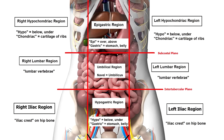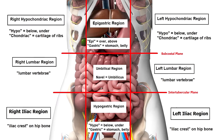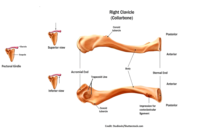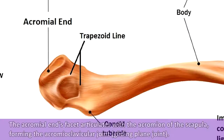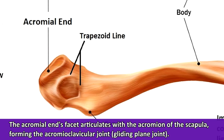The clavicle bone is also a common fracture point for athletes. Looking at the right clavicle, you'll notice that the acromial end is at the lateral side — the side near the arm — and it has a flattened appearance. The facet at the acromial end articulates with the acromion of the scapula, forming the acromioclavicular joint, a plane joint that allows gliding movements.